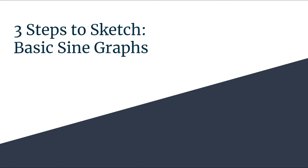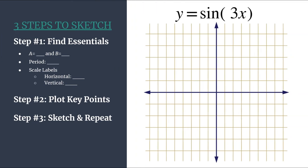In this video, we are going to use the three steps to sketch method to sketch a graph of y equals sine 3x. Here's our method outline and we've got our equation in our grid. Note that we are graphing an unshifted sine graph in the form y equals a sine bx, and knowing that helps us easily identify a and b.